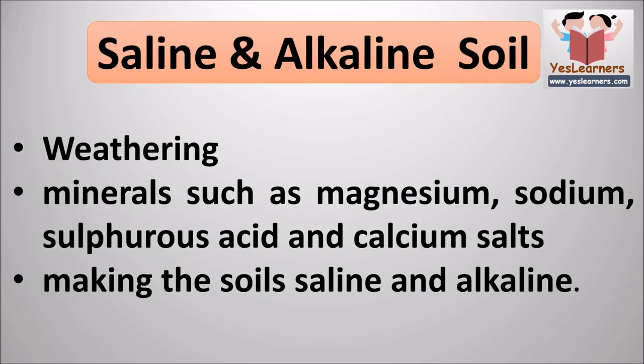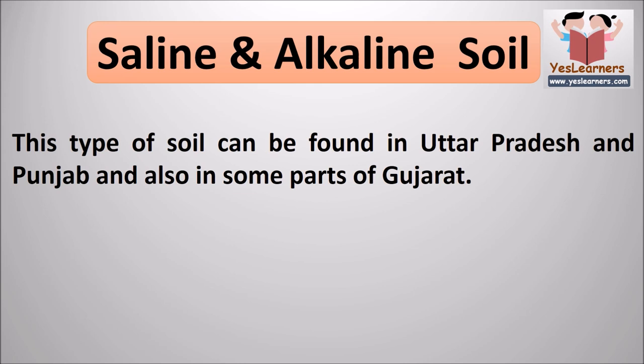There are many mineral-based and undecomposed contents inside the earth. Due to weathering, they release certain minerals such as magnesium, sodium, sulfurous acid and calcium salts. Some of the released salts get carried by rivers and mix in subsoils of the plains, making the soils saline and alkaline. This type of soil can be found in Uttar Pradesh, Punjab and also in some parts of Gujarat.